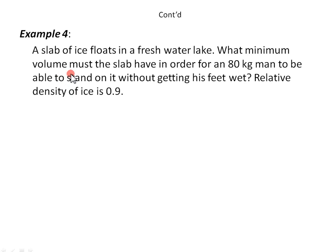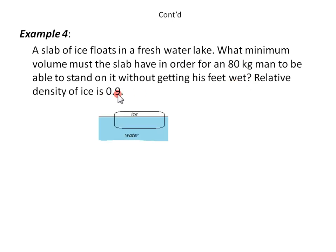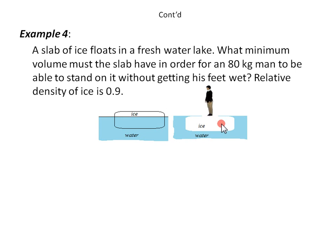In example four, a slab of ice floats in a freshwater lake. What minimum volume must the slab have in order for an 80-kilogram man to be able to stand on it without getting his feet wet? The relative density of ice is given. Picture the ice floating in water with some part above and the other below, and we want the man to stand on the ice with it just completely immersed so the person's feet do not get wet.